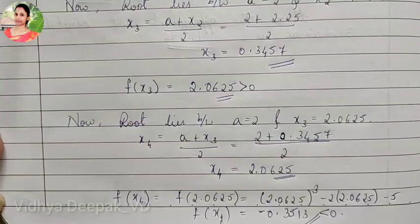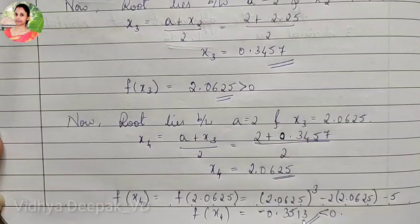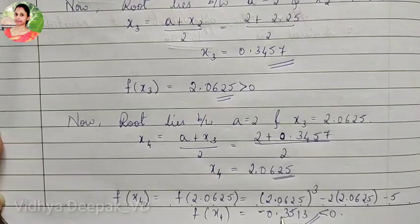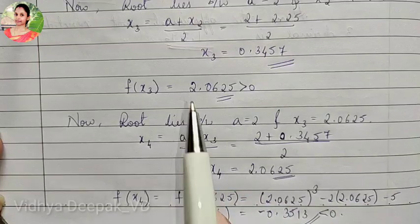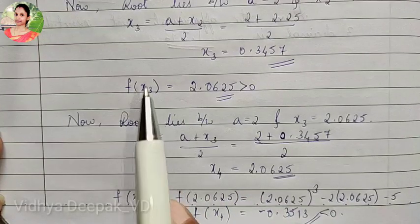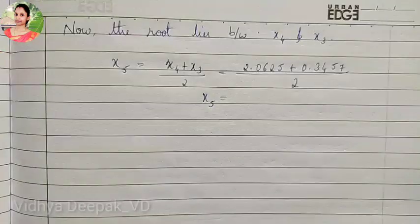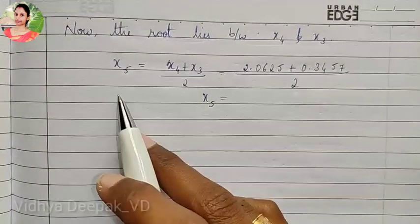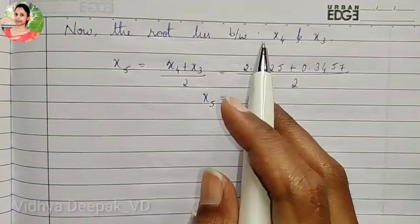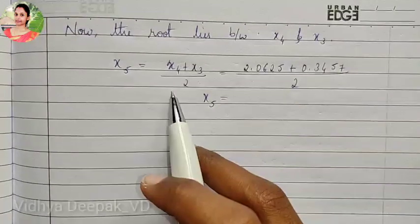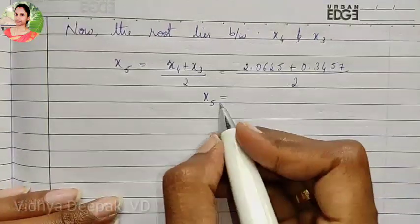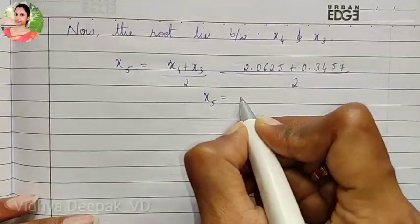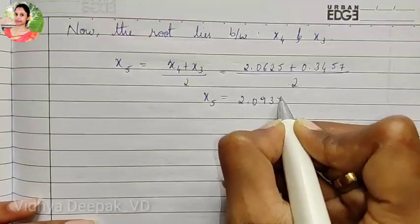Now comparing: f of x4 is negative, so we check the previous positive number, which is f of x3. That means the root lies between x4 and x3. We find x5 as x4 plus x3 divided by 2. Substituting the values, we get x5 equal to 2.0937.